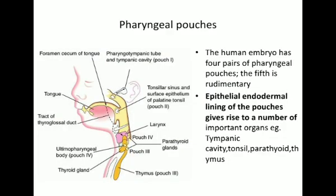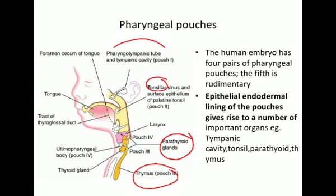Now coming to the pharyngeal pouches. Pouches are the evagination of the endodermal lining in between the two arches. These endodermal pouches form important structures like the tympanic cavity or middle ear cavity, tonsils, parathyroid and thymus. The endodermal lining of these pouches will form these structures, including the middle ear cavity and Eustachian tube. There are five pharyngeal pouches and the fifth is rudimentary, so finally there are four pharyngeal pouches.